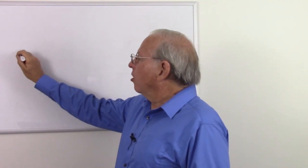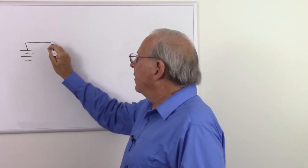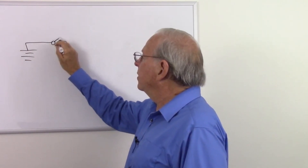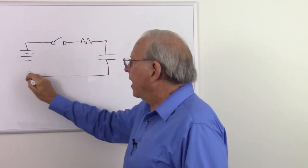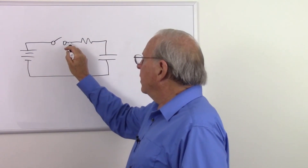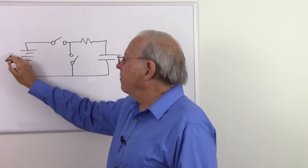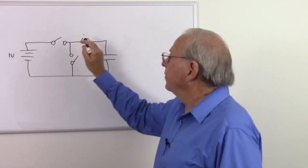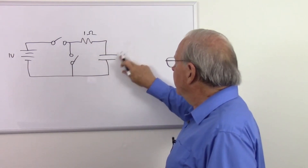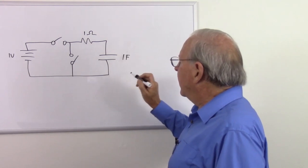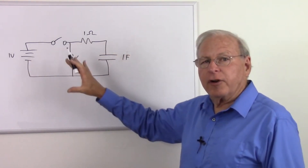Let's take a look at my charge and discharge demonstration circuit. I have a battery that goes to a switch, to a resistor, to a capacitor, and back to the battery. I put another switch here to allow me to discharge the capacitor. We're going to make this one volt, one ohm, and one farad, because this helps us understand why a particular number comes up.